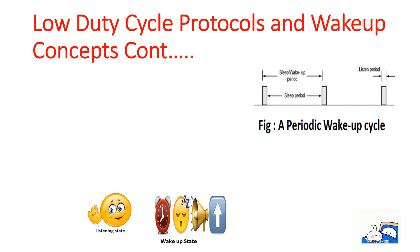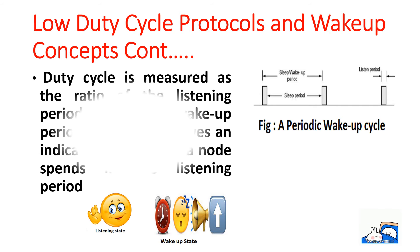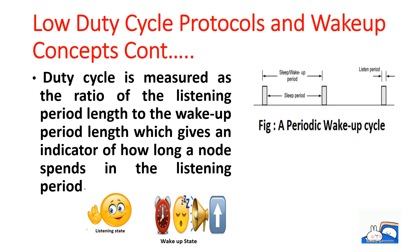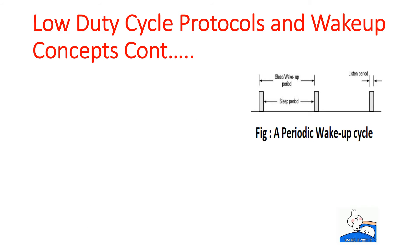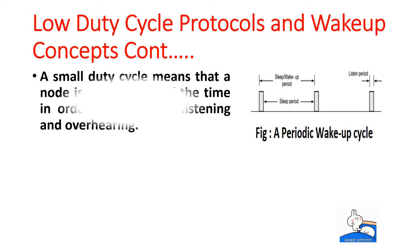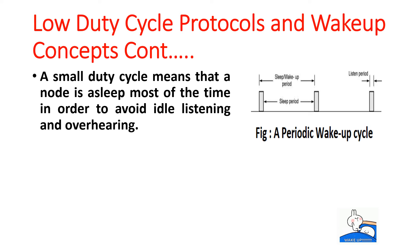The duty cycle is measured as the ratio of the listening period length to the wake-up period length, which gives an indicator of how long a node spends in the listening period. A small duty cycle means that a node is asleep most of the time in order to avoid idle listening and overhearing.